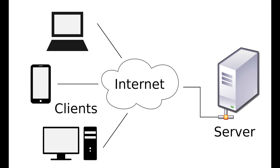Next we have client-server. This network is where clients access resources and services from a central computer via either LAN or WAN such as the Internet. Client-server networks use a dedicated computer or server to store data, manage, provide resources, and control user access. This server acts as a central point on the network to which the other computers connect. A computer that connects to the server is called a client.